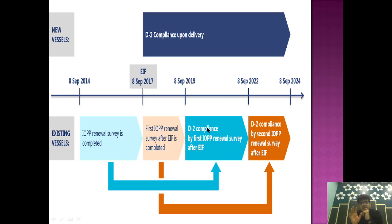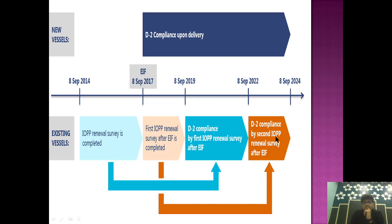This is very important to understand. The key points are: first, the convention entered into force in 2017; second, all ships have to comply by the final deadline; and third, ships constructed after entry into force must comply with D2. For ships constructed before, if the first IOPP renewal falls after 8th September 2019 they must comply then, or if it falls in between they must comply at the second IOPP renewal.